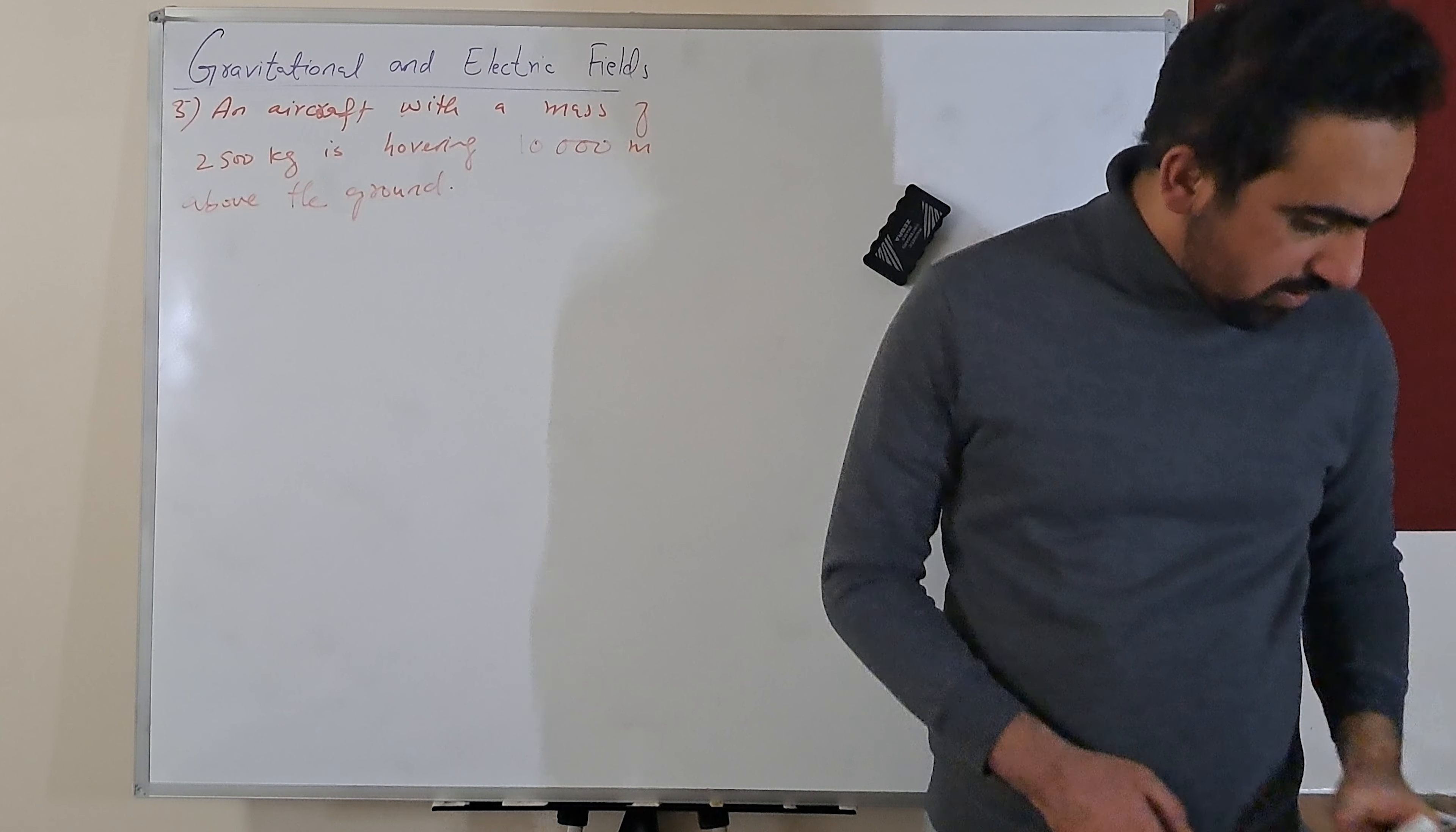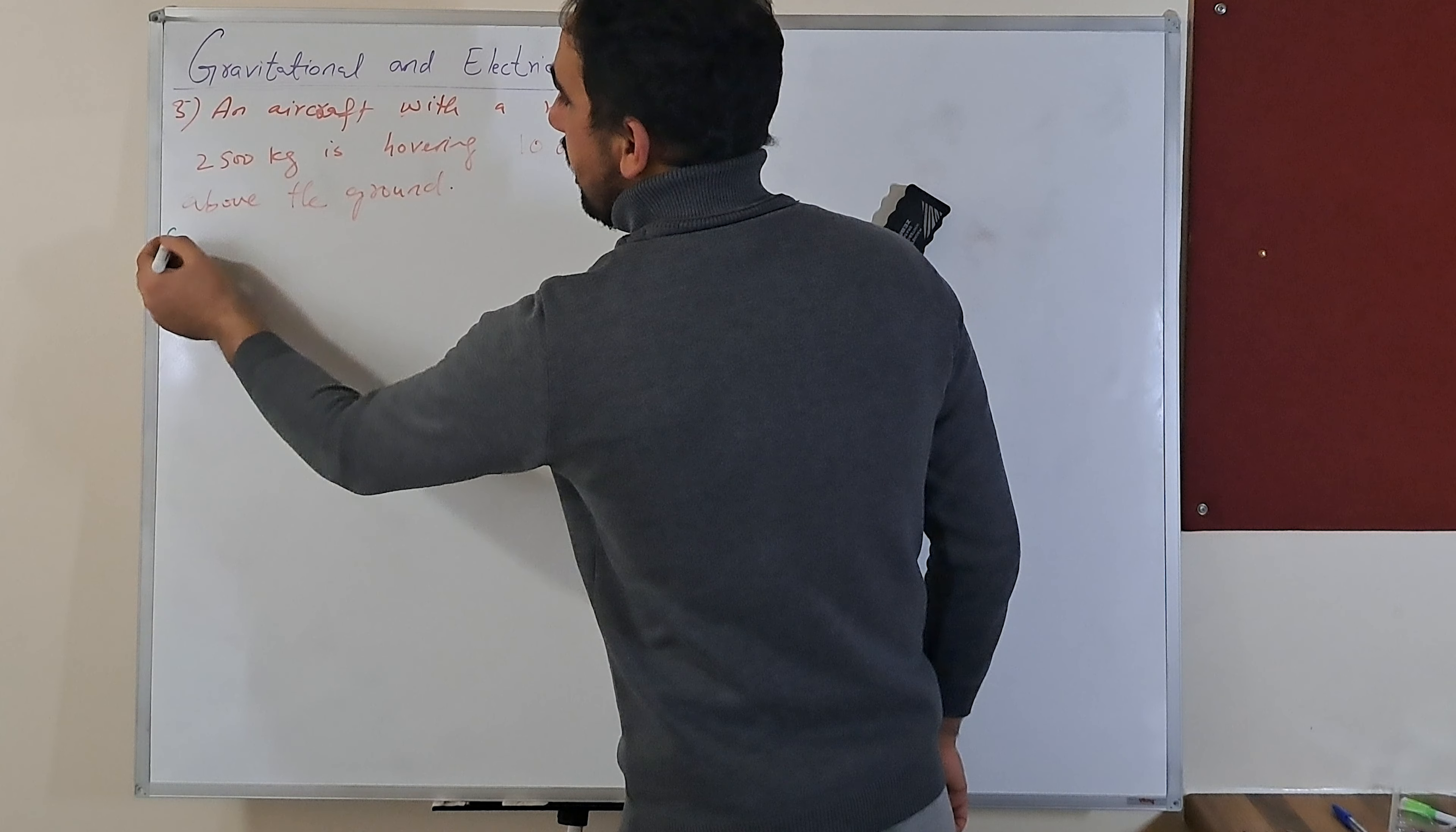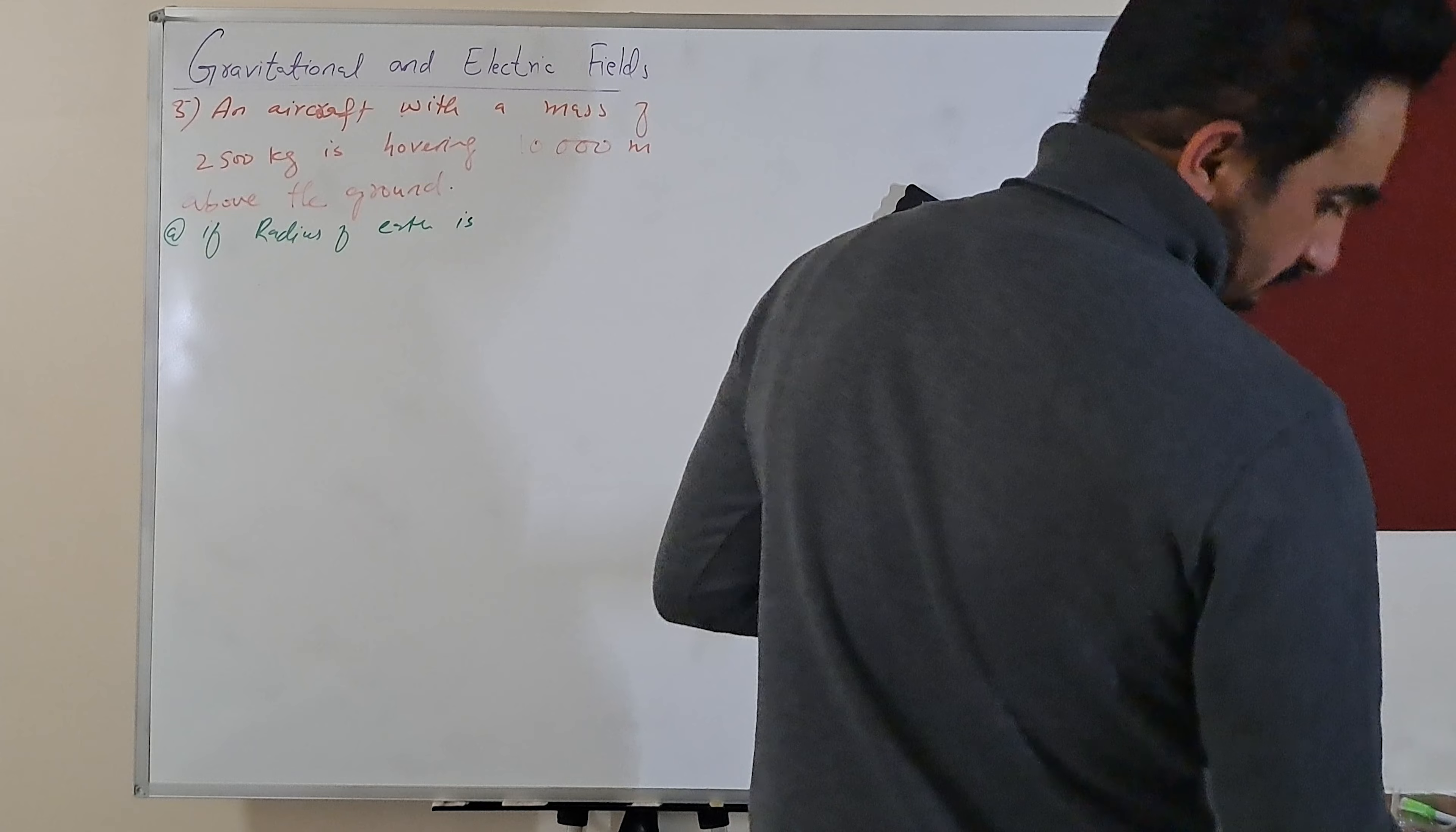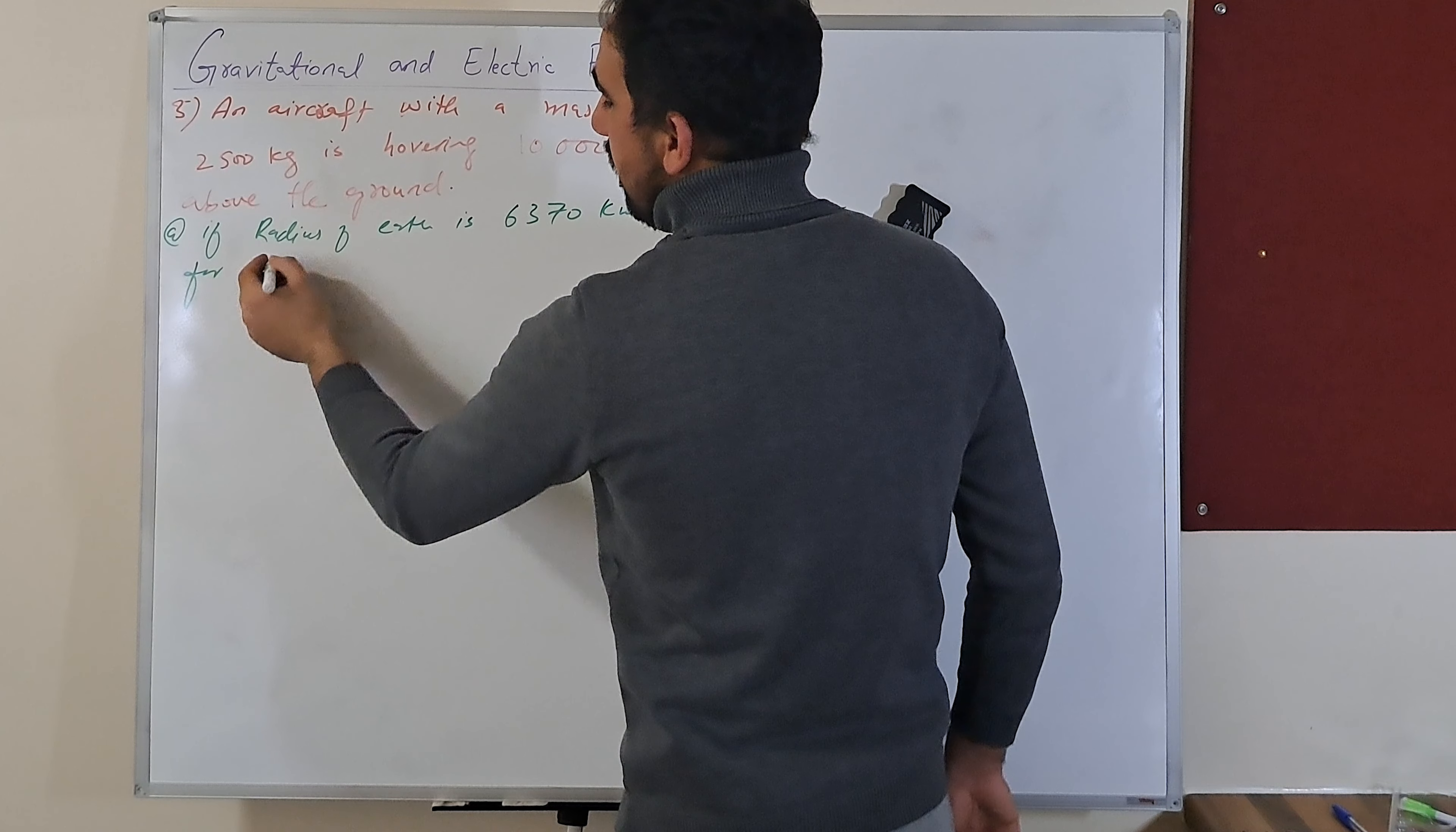He is asking us now if the radius of Earth is 6,370 km, how far is the aircraft from the center of the Earth? If radius of Earth is 6,370 km, how far is the aircraft from the center of Earth?